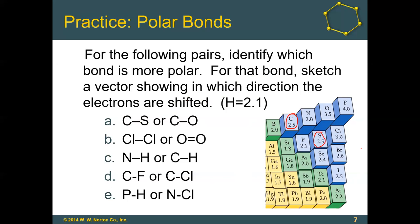Carbon is still 2.5, but oxygen is 3.5 — the difference there is 1.0. In the carbon-oxygen bond, oxygen is pulling the electrons more because it has higher electronegativity. So we draw an arrow from carbon to oxygen, putting a plus sign on the carbon side to show which direction the electrons are shifted.